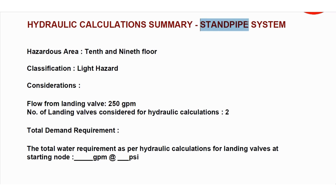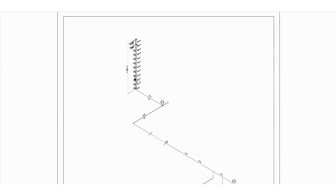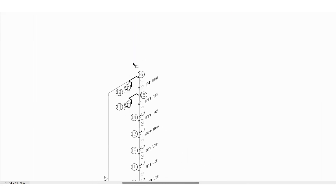Basically when you say standpipe system, it means we are considering the landing valves only. Looking at the summary sheet, the total demand requirement based on the hydraulic calculation for the landing valves will be mentioned in GPM, along with the inflow pressure required at the starting node. As per NFPA 14, we need to consider two remotest landing valves and the landing valve size will be 2.5 inch only. We cannot consider less than 2.5 inch.